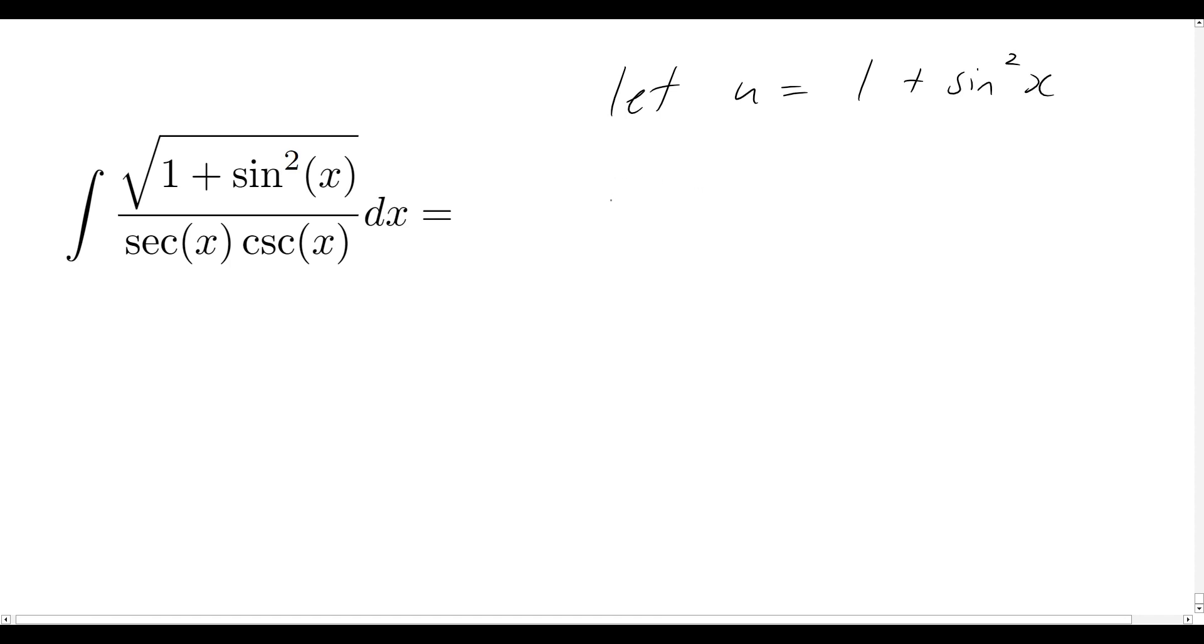So with that being said, let's quickly figure out what would du dx be equal to. Well, all we're going to be doing here is just using our product rule, and so when we differentiate this, we know that it'll just end up becoming sin of x times cos of x plus sin of x times cos of x, and of course you can just rewrite that as 2 sin x cos x.